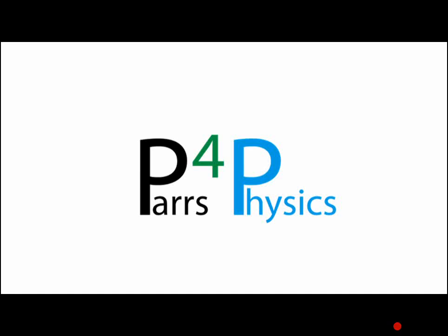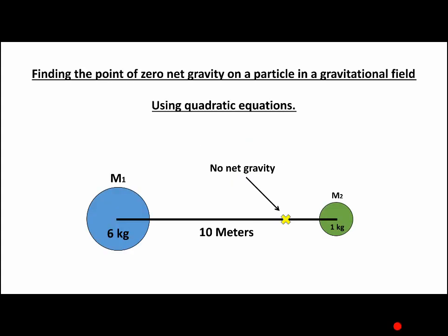Hello there and welcome to another Pars for Physics A-level tutorial. Today we'll be finding the point of zero net gravity on a particle in a gravitational field. And today we'll be using the quadratic equation.